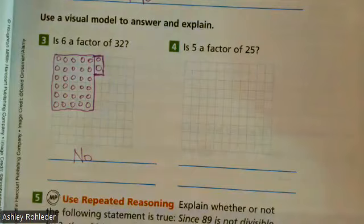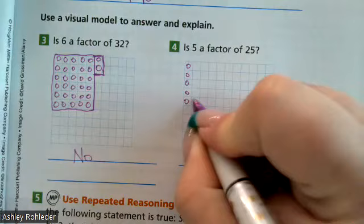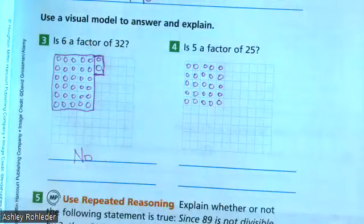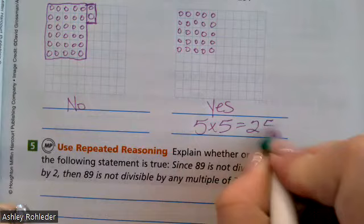Is five a factor of 25? It will be, right? But they want us to show. So how far down would I go? Five. Counting up to 25 in rows of five. So is five a factor? Yes. Five times what is 25? Five. So five times five equals 25.